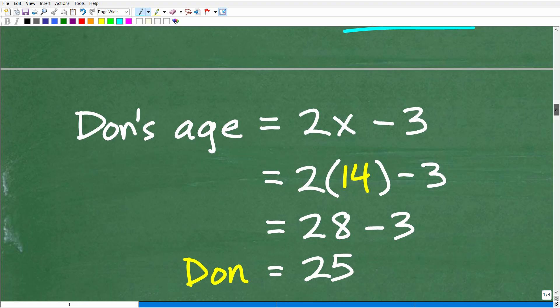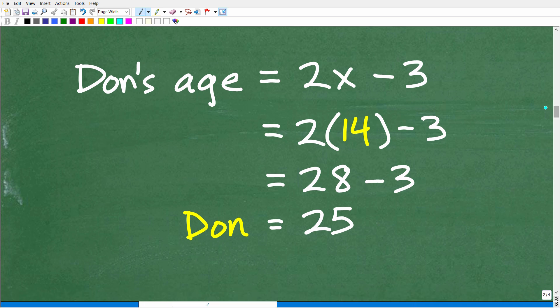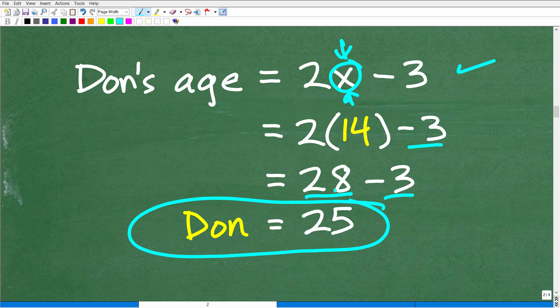Okay, awesome. So now let's go ahead and get Don's age. And this is pretty easy now because we know that Don's age is 3 less than twice Ted's age and X represented Ted's age. And now we know that Ted is 14. So I'm just going to plug in a 14 for X. So it's going to be 2 times 14, which of course is 28 minus 3, which is 25. So Don is 25.